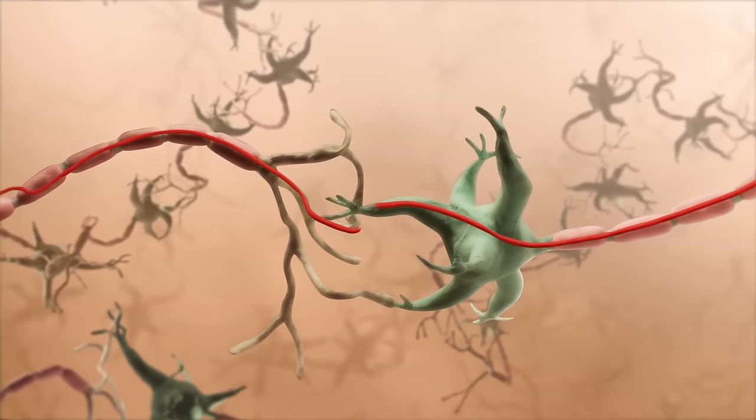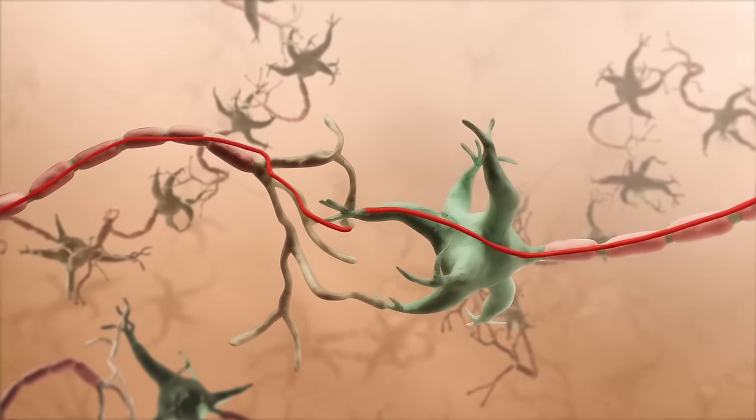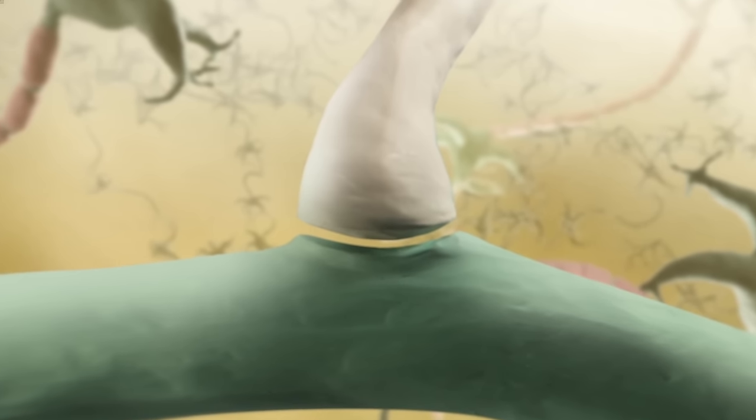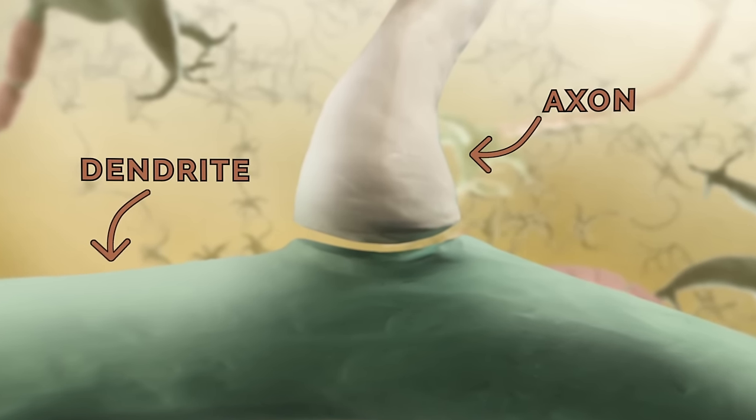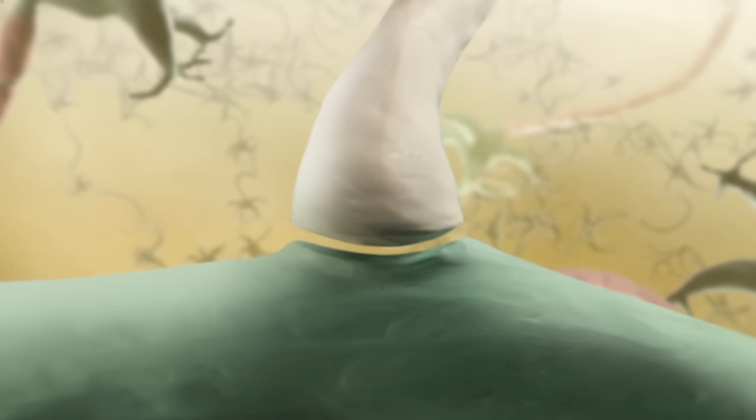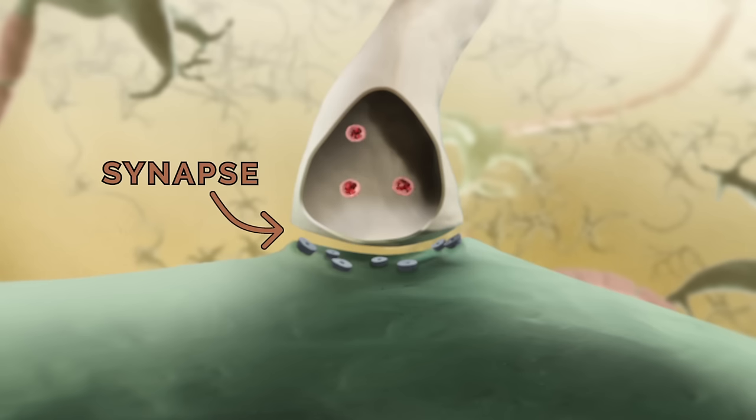The axon then carries the propagating action potential to another neuron. So what actually happens at the boundary between two neurons, between the axon of one neuron and the dendrite of another? This interface is called a synapse.